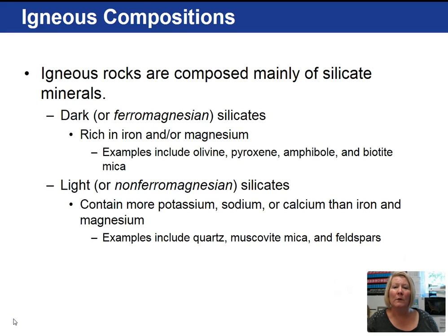Remember, dark silicates, called ferromagnesian minerals, consist of iron and/or magnesium attached to the silicon-oxygen tetrahedra. Examples of ferromagnesian silicates include olivine, pyroxene, amphibole, and biotite mica.